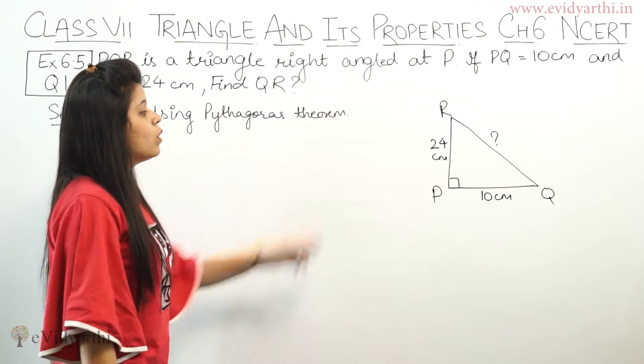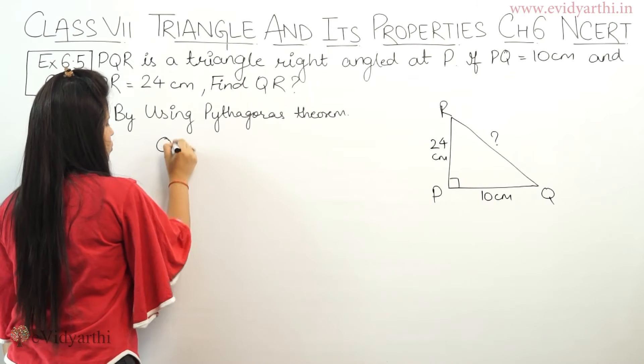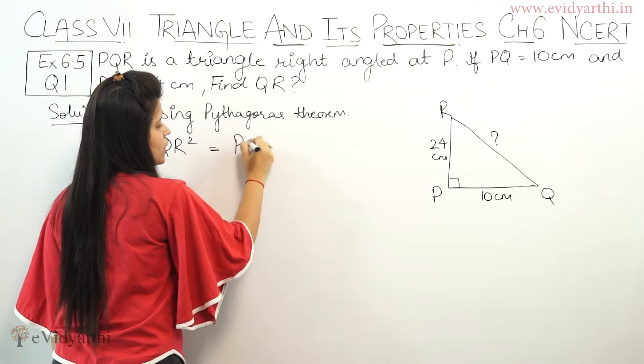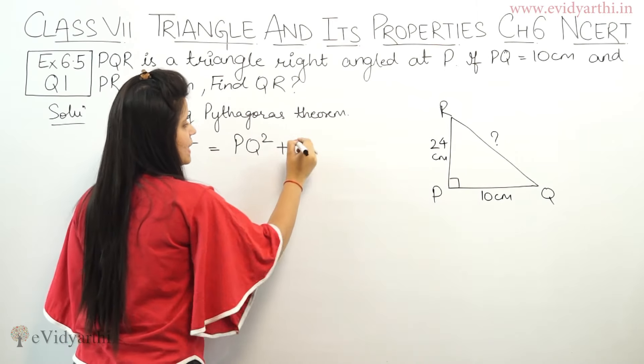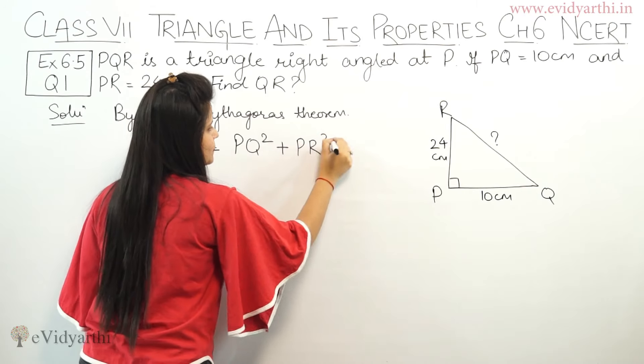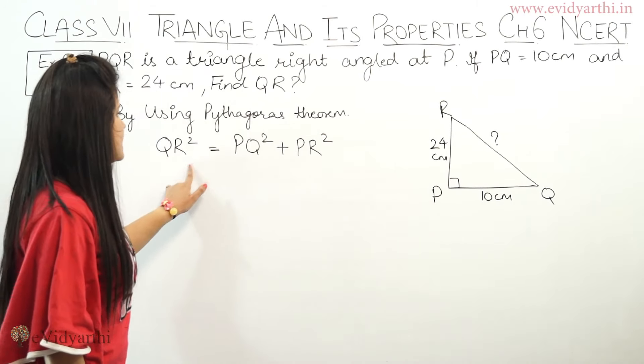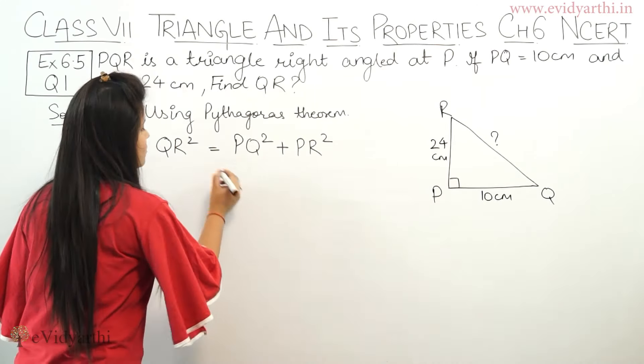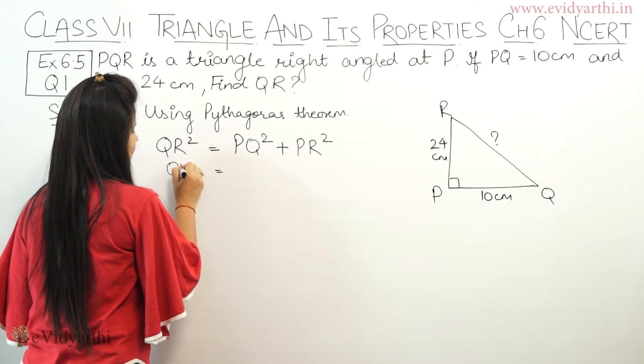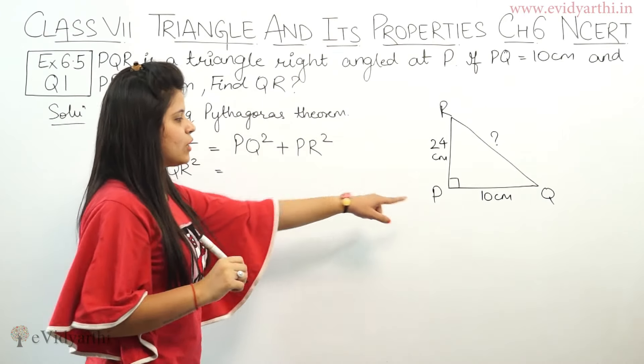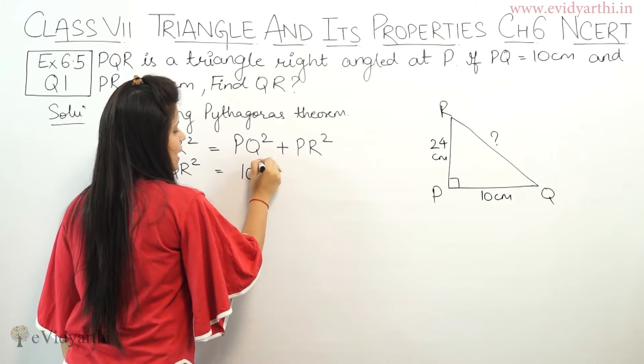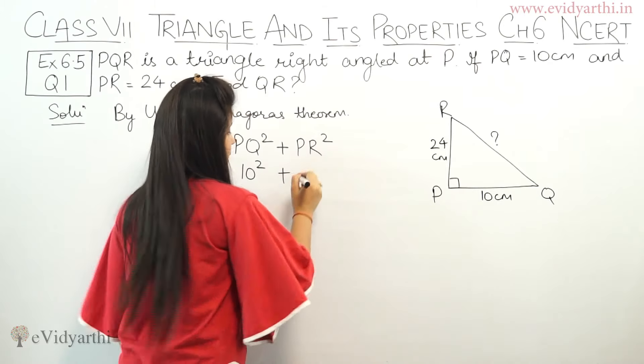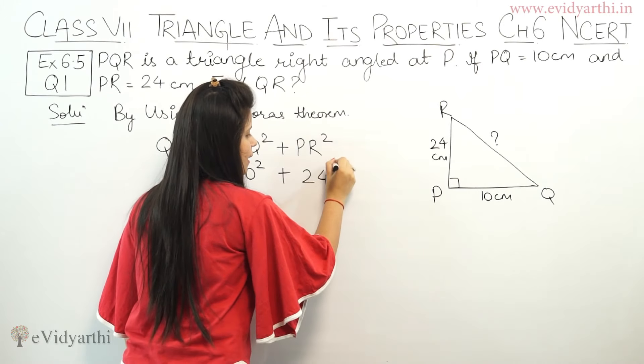By Pythagoras theorem, QR square equals PQ square plus PR square. Hypotenuse square is equal to the other two sides squared. If we put values, PQ is 10 cm, so this is 10 square, plus PR is 24 cm, so this means 24 square.